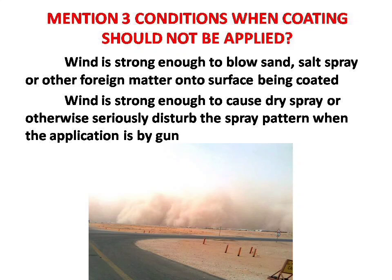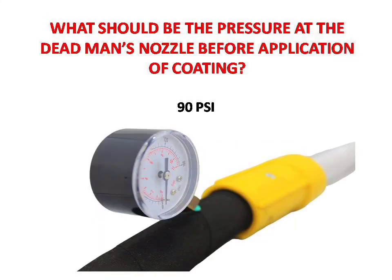Next question: what should be the pressure at the dead man's nozzle before application of coating? Answer is: 90 psi.